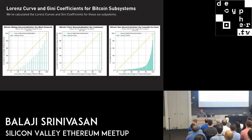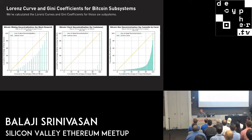For each subsystem, we calculate Lorenz curves and Gini coefficients. If we take the last 24 hours of Bitcoin mining, it's actually fairly spread out — a bunch of different folks have earned some — so this has a relatively low Gini coefficient and wasn't very centralized at the time. Client decentralization: most Bitcoin clients are running Bitcoin Core, with some running ABC or Bitcoin Unlimited or others. Developer centralization by commits to Core: how many commits does the first developer have, the second most contributing developer, and so on — that's actually fairly concentrated, though not as much as clients.